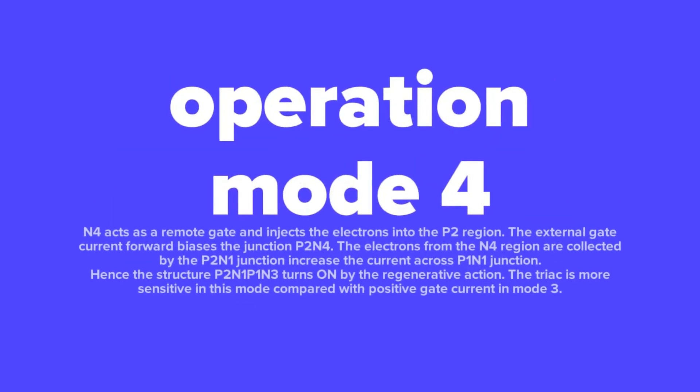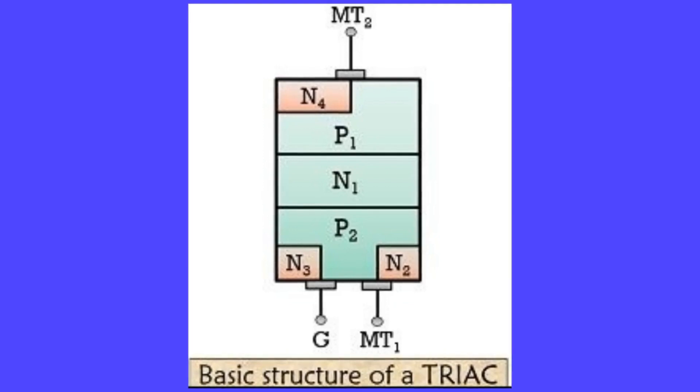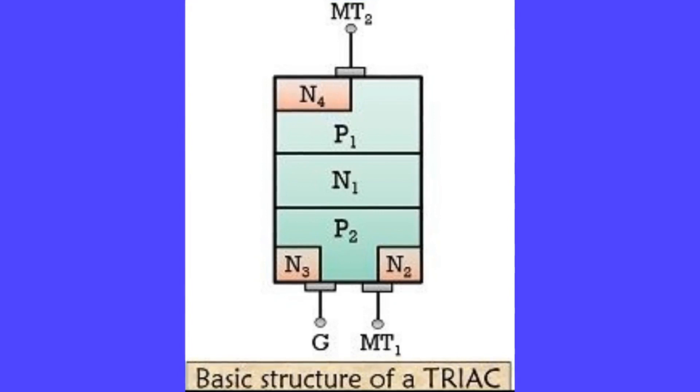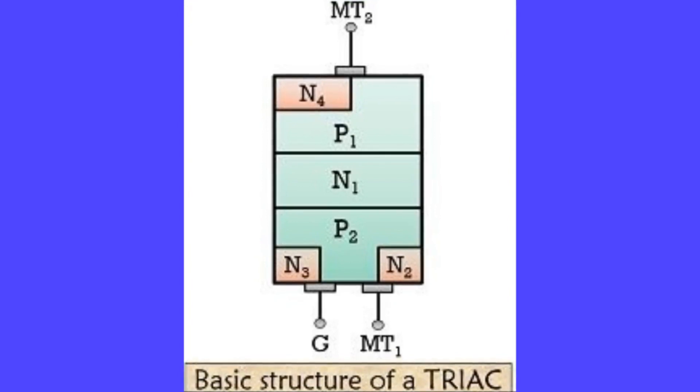In Mode 4, N4 acts as a remote gate and injects electrons into the P2 region. The external gate current forward biases the junction P2-N4. The electrons from the N4 region are collected by the P2-N1 junction, increasing the current across the P1-N1 junction. Hence the structure P2-N1-P1-N3 turns on by regenerative action. The TRIAC is more sensitive in this mode compared with positive gate current in Mode 3.